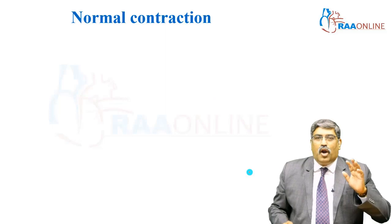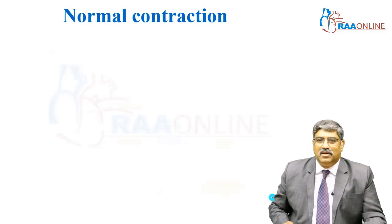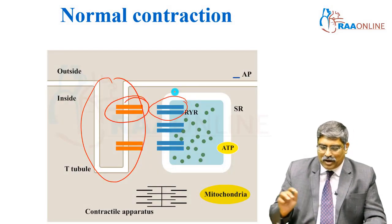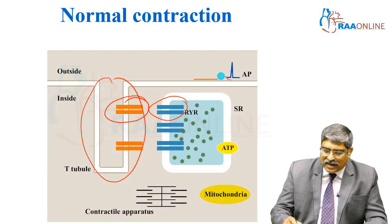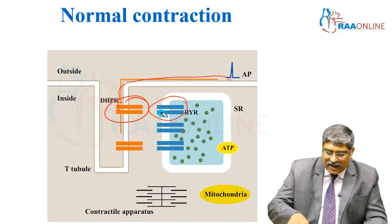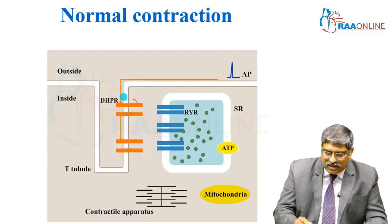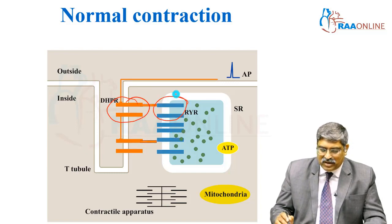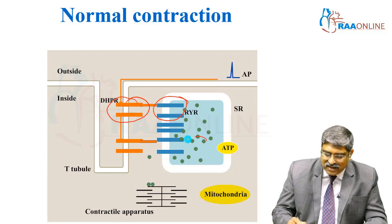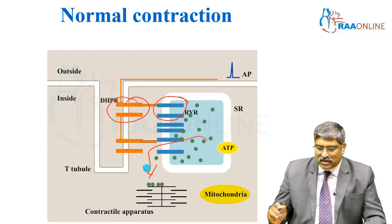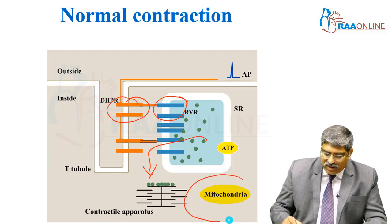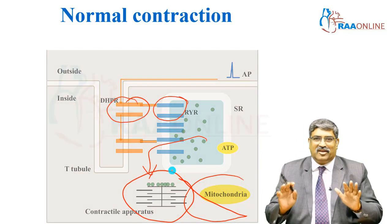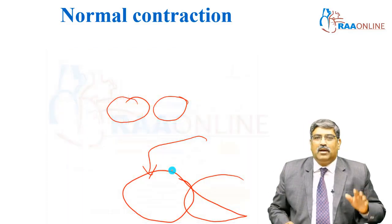Coming to the normal contraction in skeletal muscle. This is the T-tubule dihydropyridine receptor. This is the ryanodine receptor. An action potential comes and activates the dihydropyridine receptor, which in turn activates the ryanodine receptor channel. Calcium comes from the sarcoplasmic reticulum, goes into the cytoplasm, and acts on actin and myosin to initiate contraction. This is the normal contraction.